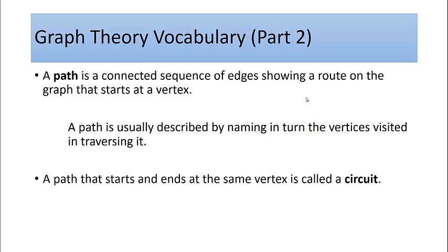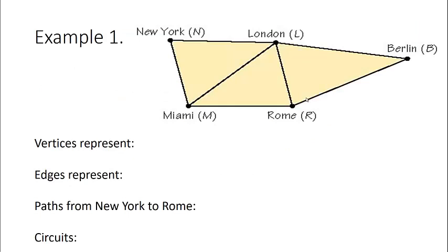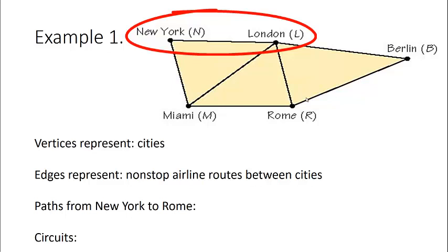Here's an example. In this graph our vertices represent cities: New York, London, Berlin, Rome, and Miami. We're going to pretend that the edges represent non-stop airline routes between these cities. The graph tells us that there is a non-stop airline route from New York to London because there's an edge connecting those two vertices.